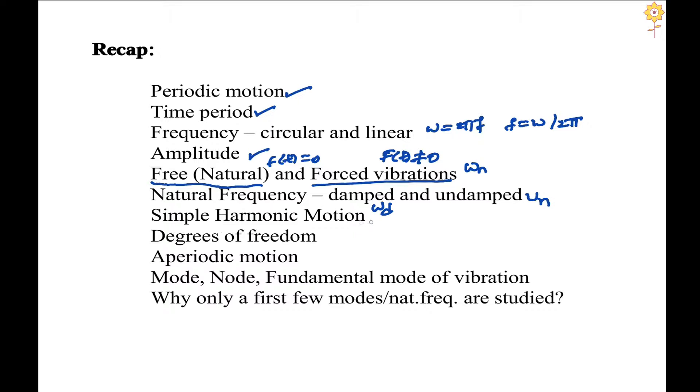Simple harmonic motion. We have seen two definitions for this. The first definition is the motion of the projection of a particle taken along the diameter of a circle when the particle itself moves along the circumference with uniform speed. The second definition is the motion in which the acceleration tends to be acting in the direction of the mean.